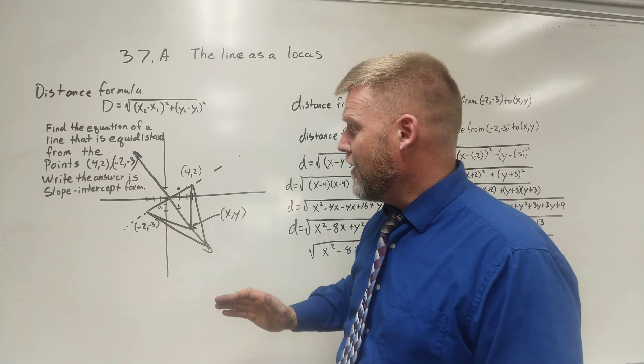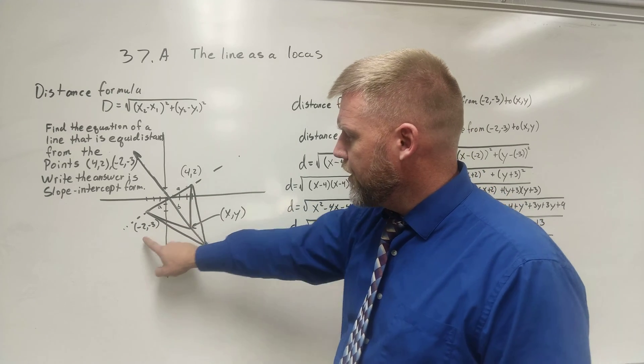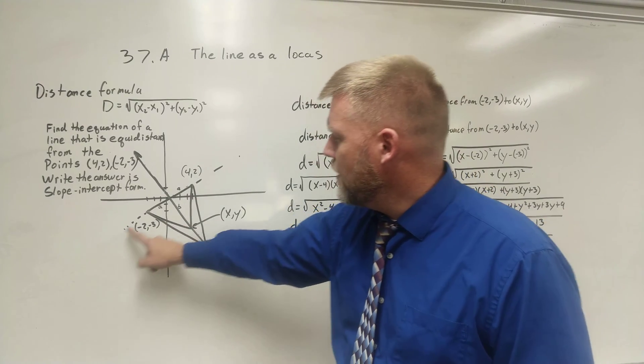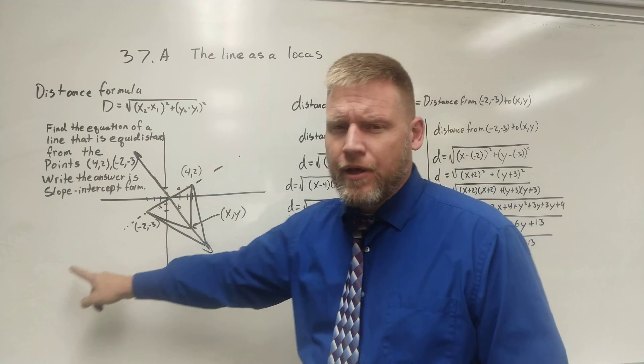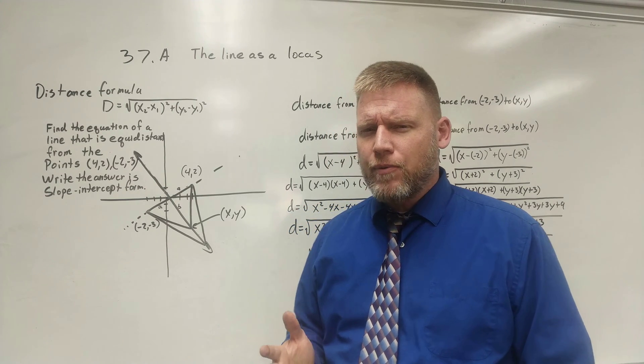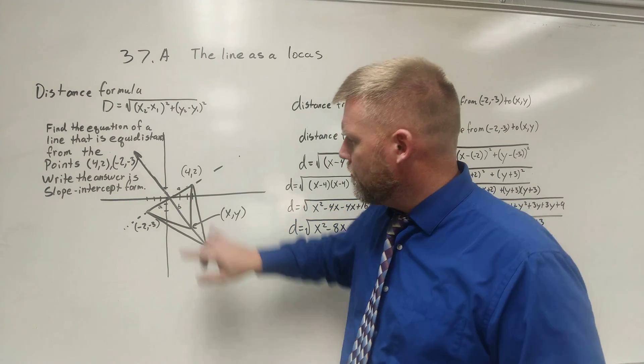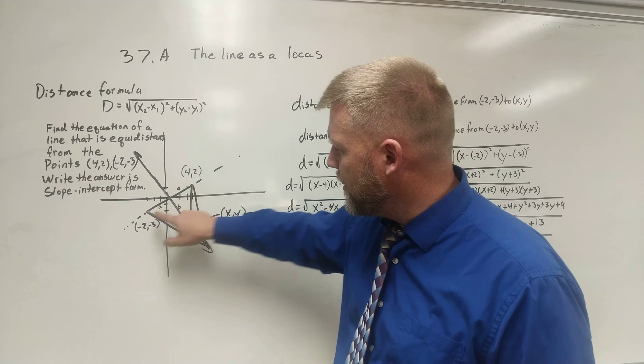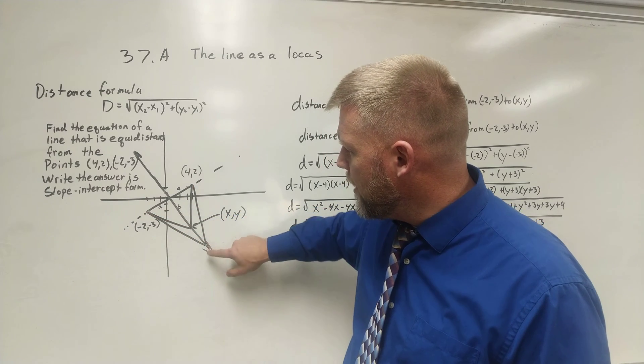I want the equation of that line. Now I realize that here's my 4, 2, here's my negative 2, negative 3. This is the line that passes through them. Now if I'm paying attention to it, I realize that any two lines going from here and here where they meet,